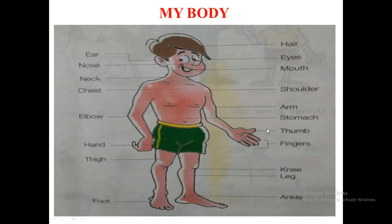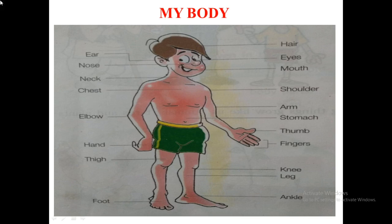This is a picture of my body, meaning the human body. The parts shown here are: hair, eyes, mouth, shoulder, arm, stomach, thumb, fingers, knee, legs, ankle, ear, nose, neck, chest, elbow, hand, thigh, and foot. These are all our whole body parts.